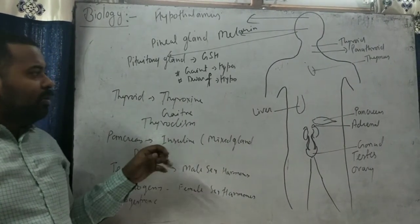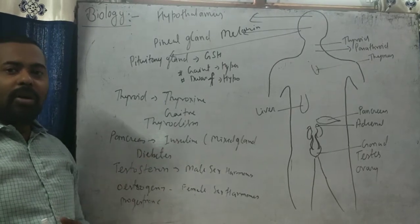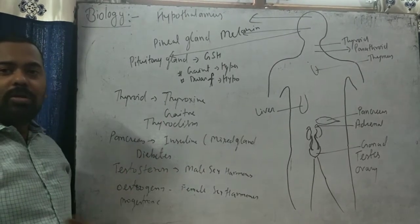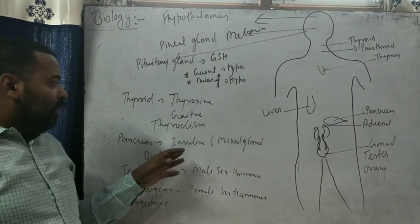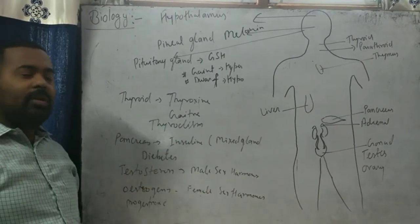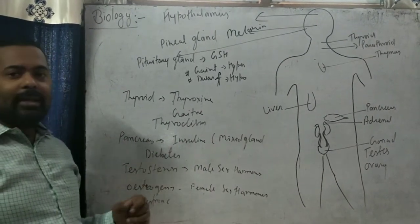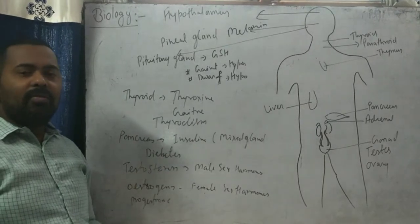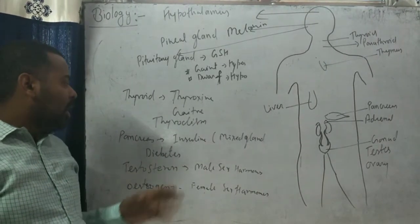Another gland present after the stomach is the liver — the largest gland in our body, which secretes bile and helps in digestion of fat molecules. Next is the pancreas, also known as a mixed gland, which secretes insulin hormone. As learned in the nutrition topic, the pancreas also secretes pancreatic juice containing amylase, trypsin, and lipase, which help in digestion. Insulin helps to maintain blood glucose levels in our body. Hyposecretion of insulin causes diabetes mellitus and hypersecretion causes hyperglycemia. Diabetes is of two types: diabetes mellitus and diabetes insipidus.